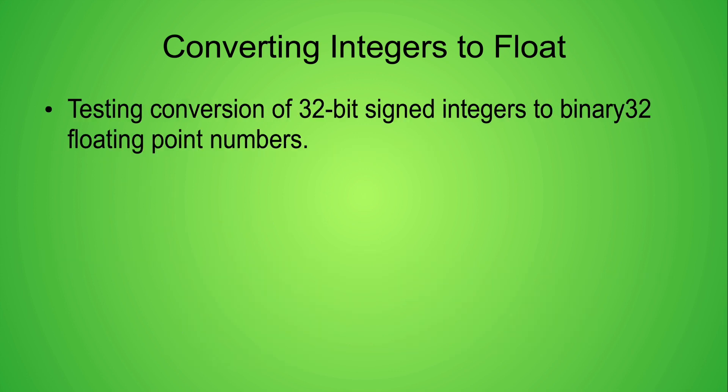Now on to the main topic of this video: testing the conversion of 32-bit signed integers to binary32 floating point numbers and when needed rounding the result. To start I created a Verilog $monitor statement to print the results of the conversion every time the 32-bit integer value was updated. This statement prints the value of the 32-bit integer in both decimal and hexadecimal followed by four different floating point values.